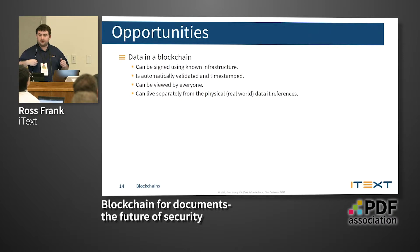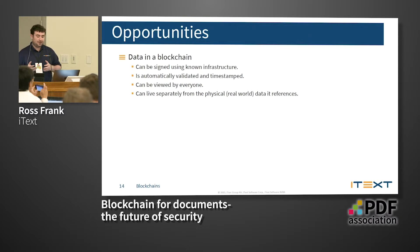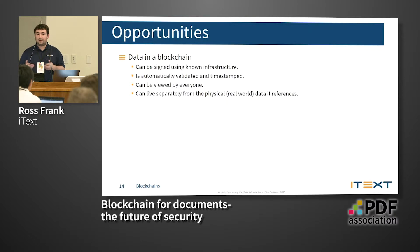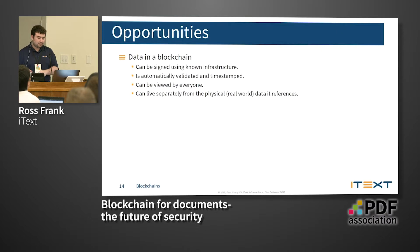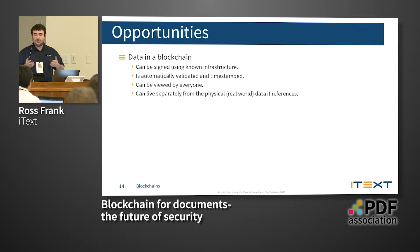Blockchain can remove that need by removing signatures from the document itself. Because data is in the blockchain — a known infrastructure outside the document — it's automatically validated and timestamped using private and public keys. The hash is still viewable by anyone, so anyone with the document can verify what was signed. Because blockchain is separate and the data lives separately, the document can be shared and looked up again without changing.